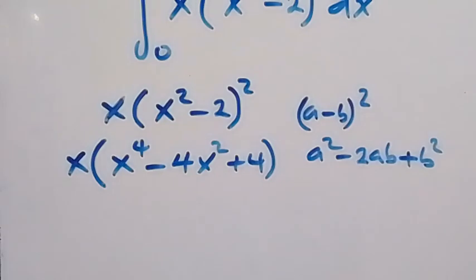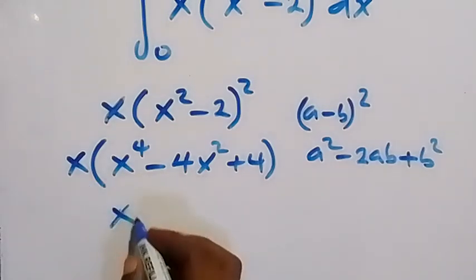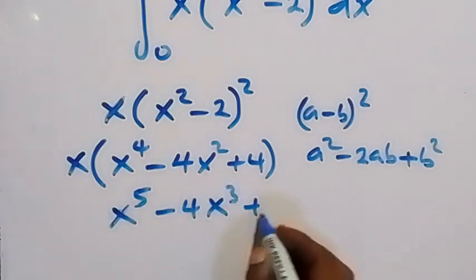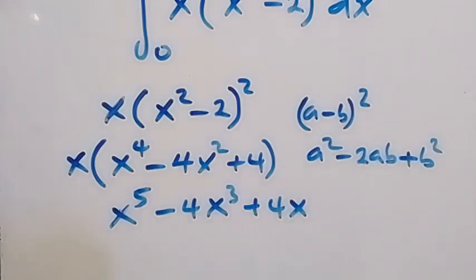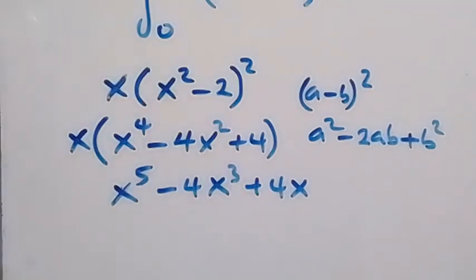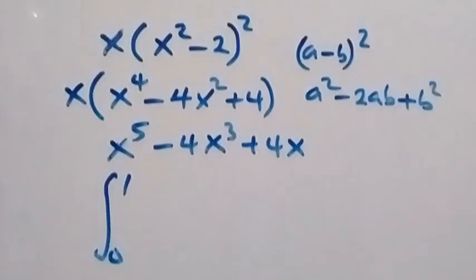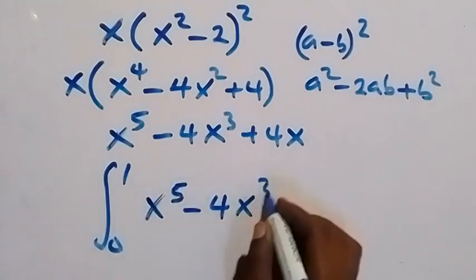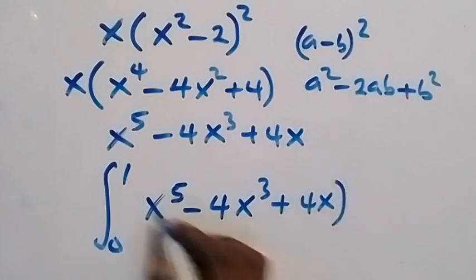Now we use x to open the bracket. Multiplying through, x times x⁴ is x to the power 5, then minus 4x to the power 3, then plus 4x. So we can write the definite integral from 0 to 1 of x⁵ minus 4x³ plus 4x dx.